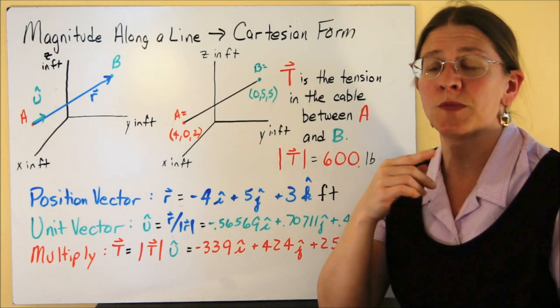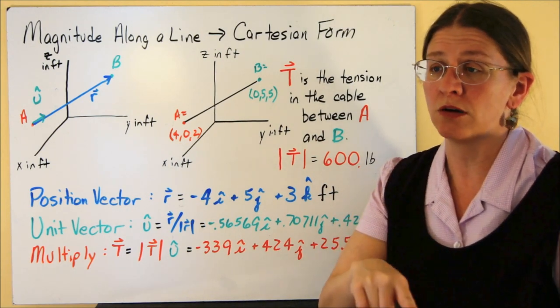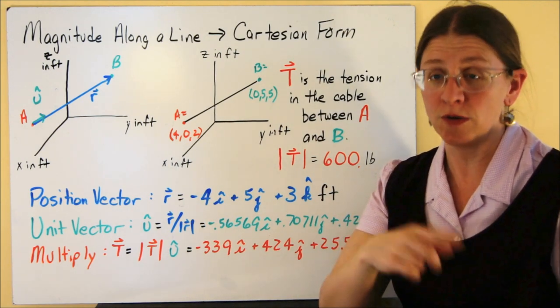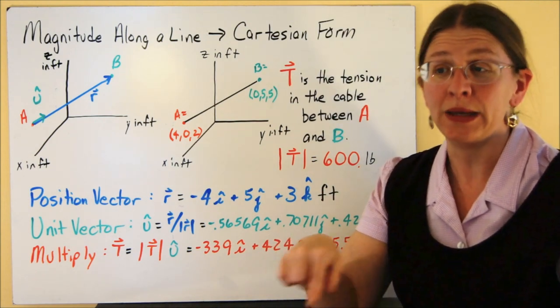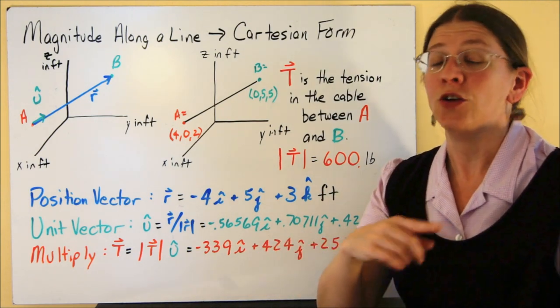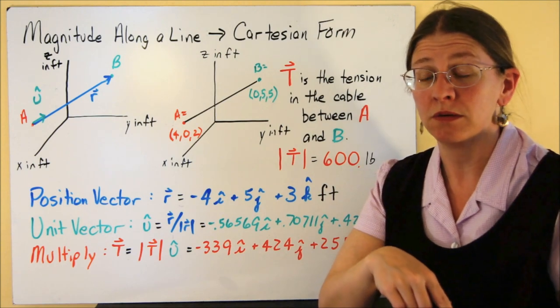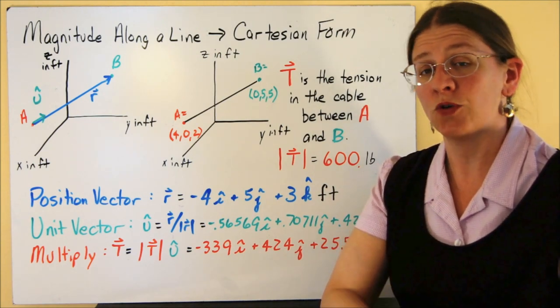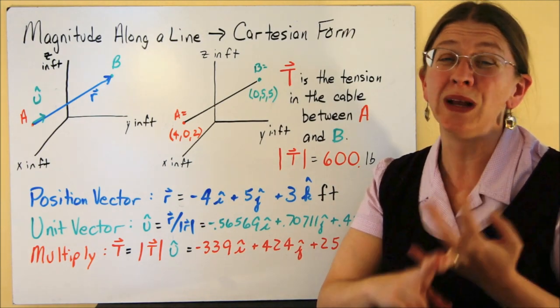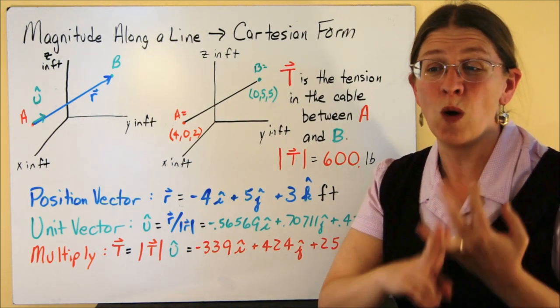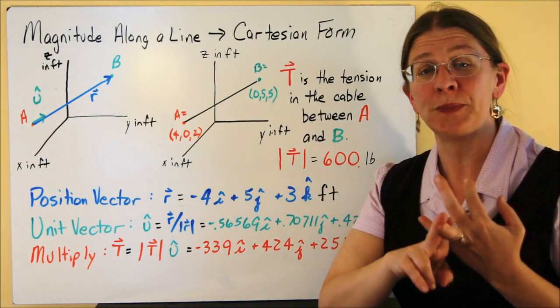One note about the subscripts. You will see some people say R sub CA, meaning from C to A. And you will see some people have R sub AC, meaning C minus A. You can't count on the subscripts. Different people do it different ways. So make sure that when you're both using them and defining them for somebody else, you're really specific about what your force is going from and to. Thanks.